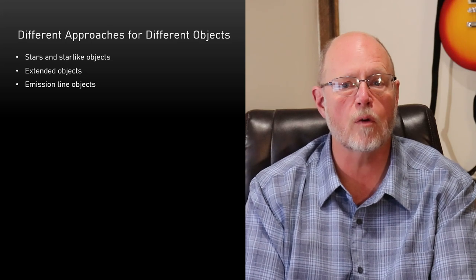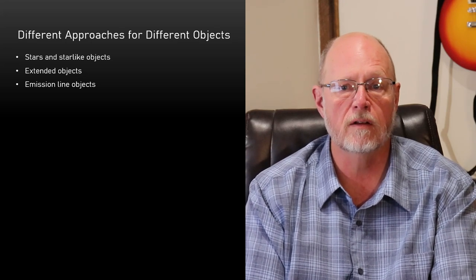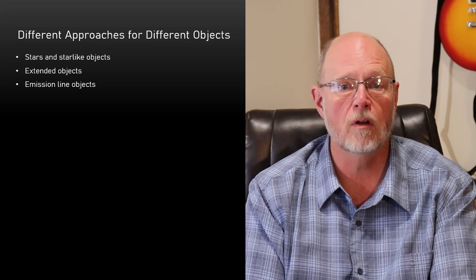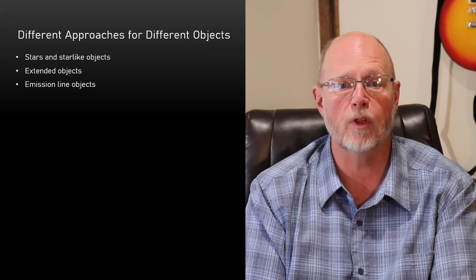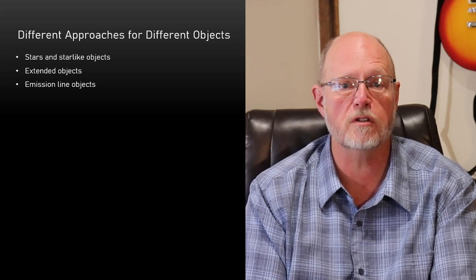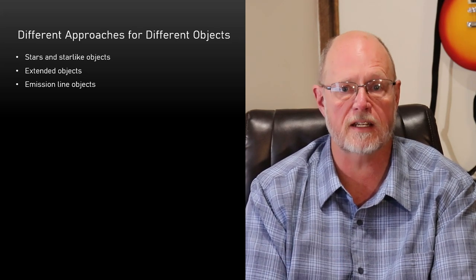For a faint star, quasar, or minor planet, the question could be as simple as, can I detect it? Or, what is the total exposure time required to detect it? And even, what sub-exposure time should I use to have the best chance of detecting it?